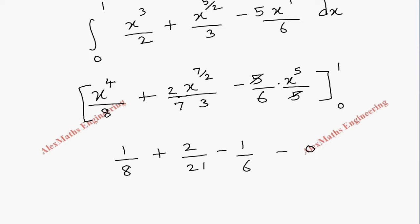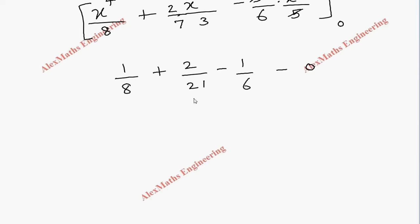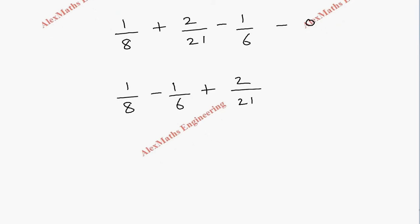Now we take LCM. Before that, let's group 1/8 minus 1/6, so this grouping makes the LCM process easier. To make a common denominator, multiply 1/8 by 3 and 1/6 by 4. The LCM of 8 and 6 is 24.